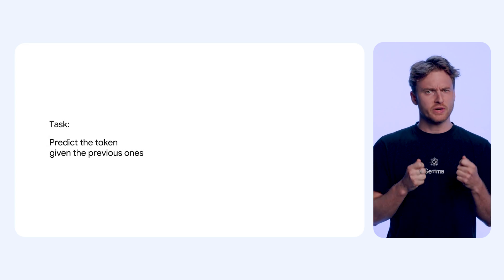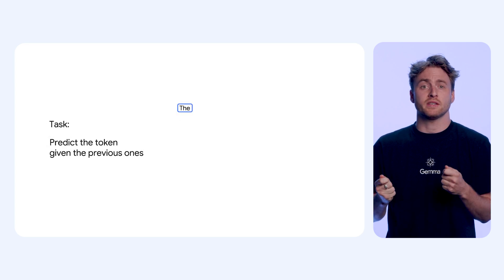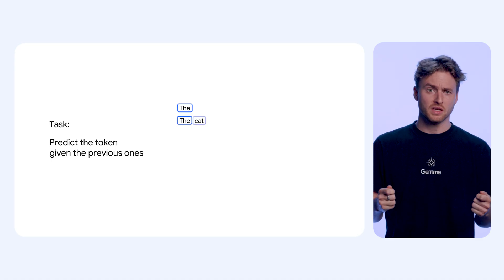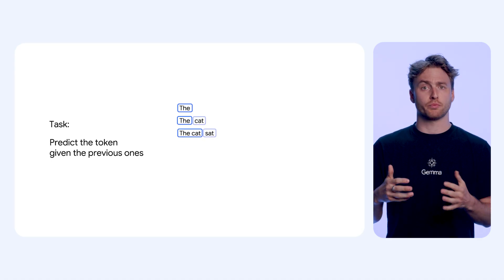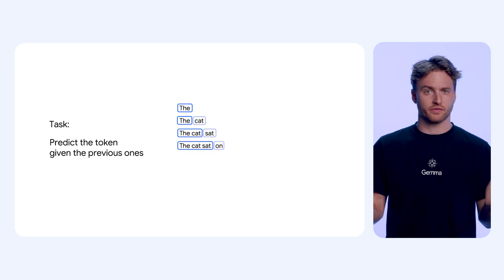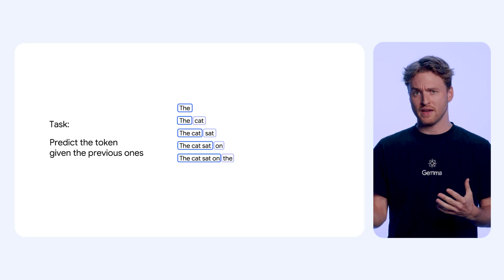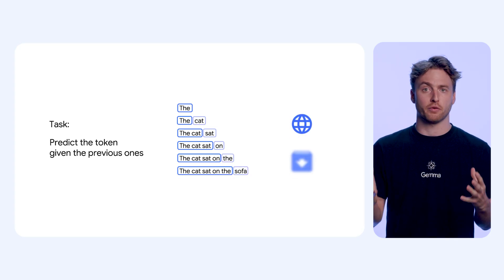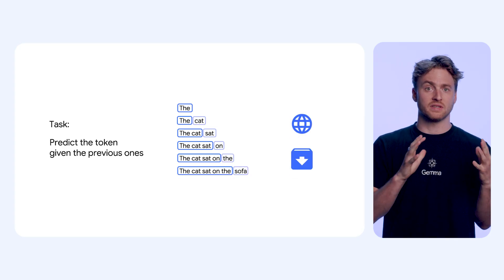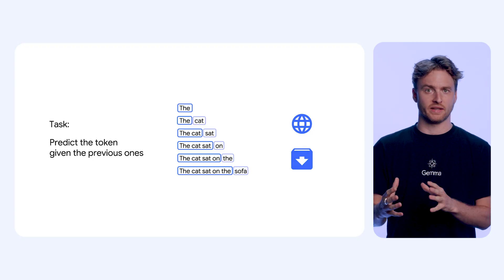First up is pre-training. During this phase, the model is trained using cross-entropy loss, meaning we teach it next token prediction on a massive amount of data. The model compresses the whole world's information using text and images we feed it into its weights.